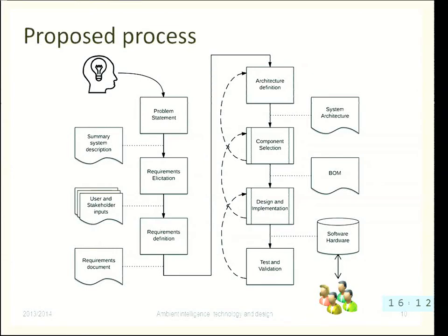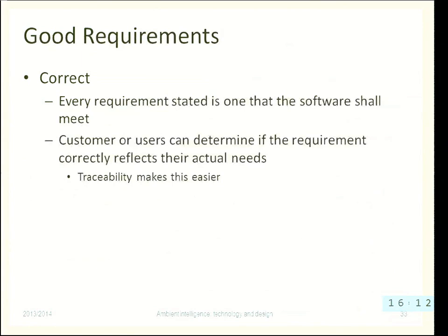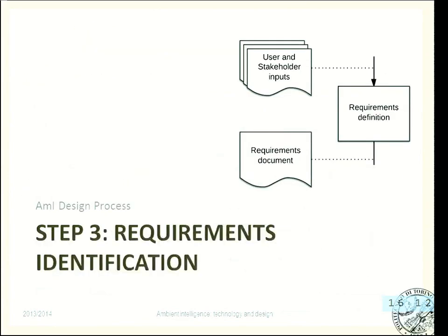Today we will finish the description of the process for designing embedded intelligent systems, and at the end we will try to simplify this process into something feasible within the activity of this course — coming down from the general description to what is required here. Last time we already discussed the first two steps: problem statement and requirements. We must continue from step three onward.